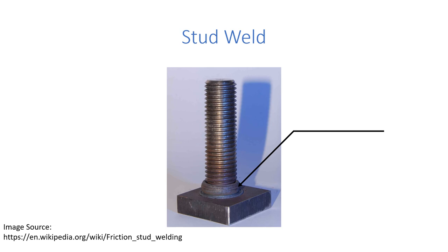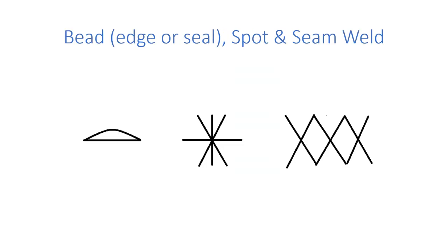Next is stud weld. For that, simply the symbol is: we show the stud perpendicular to the reference line. Next is bead weld, as put in an edge joint. This is the symbol for spot weld — we can mention the number of spots to be put. And this is the symbol for seam weld.